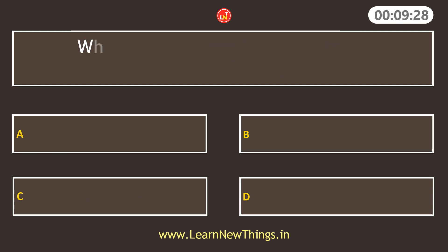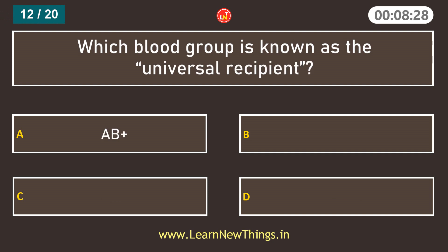Which blood group is known as the universal recipient? AB positive.